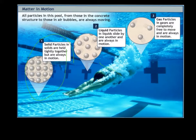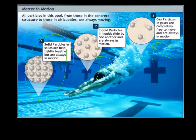In a liquid, like in a swimming pool, the particles are going to be further apart. They have the ability to slide past one another, which is why a liquid can take the shape of its vessel — there's a little more room between the particles. In a gas, there's lots of space between particles and they're free to move all over.